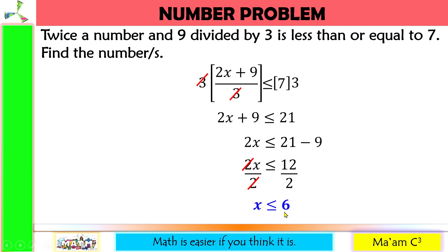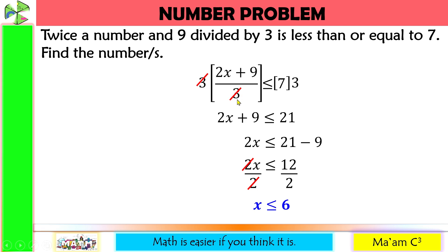Let us check. If x equals 6: 2 times 6 is 12, plus 9 is 21, divided by 3 equals 7 — correct. If x equals 3: 2 times 3 is 6, plus 9 is 15, divided by 3 equals 5, and 5 is less than 7 — also correct. So the answer is x is less than or equal to 6.